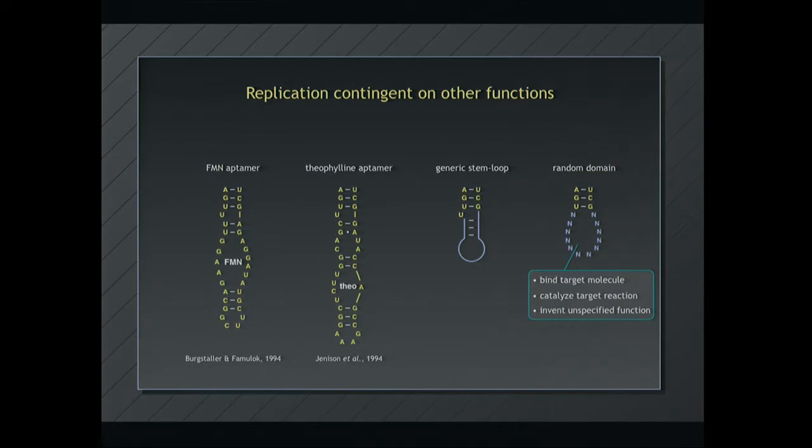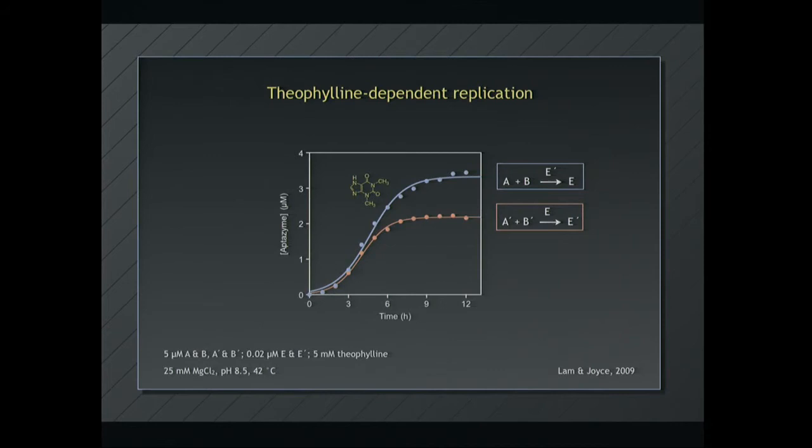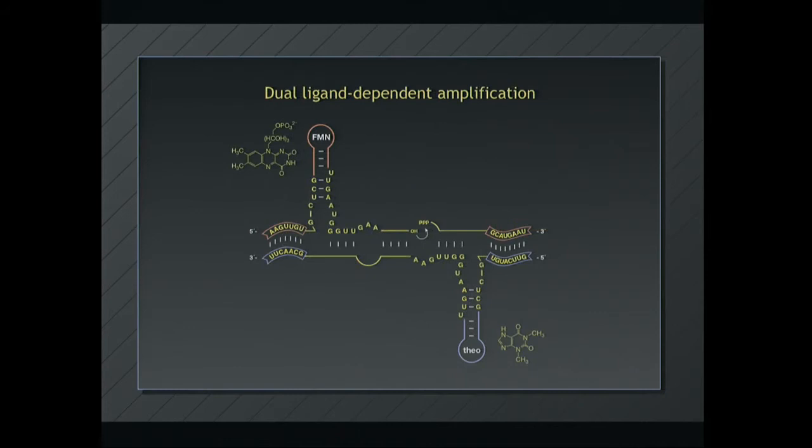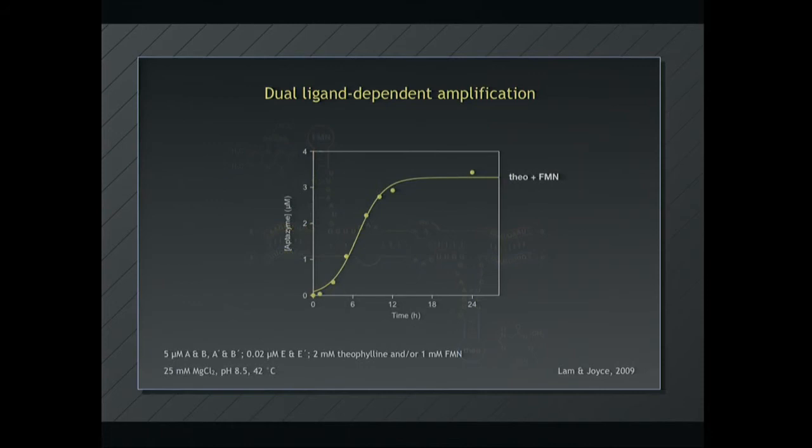So here's what happens if we put the theophylline aptamer in that central domain. Now, in the presence of theophylline, we get exponential amplification with theophylline present. If there's no theophylline, or a closely related molecule that you may have had at lunch, caffeine, differing only by a methyl group compared to the theophylline, there's no amplification. So this is now replication contingent on whether you had coffee or tea at lunch. And since we have two traits, we could put the theophylline aptamer here, the flavin mononucleotide aptamer here, and now if both theophylline and flavin mononucleotide are present, and here I just show E, but E prime is along with it, exponential amplification. But if either theophylline or FMN are present, only linear amplification. So one enzyme is on, turning over linearly, but its cross-catalytic partner is off. So that's the difference between linear amplification and exponential.